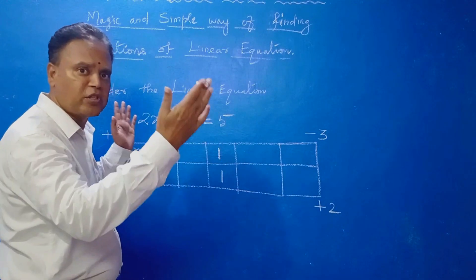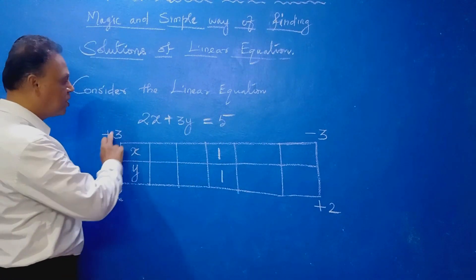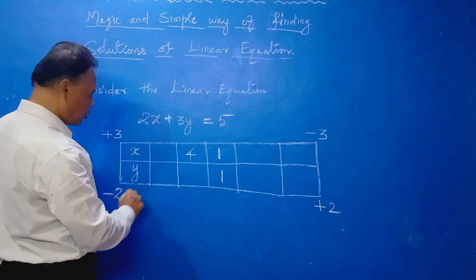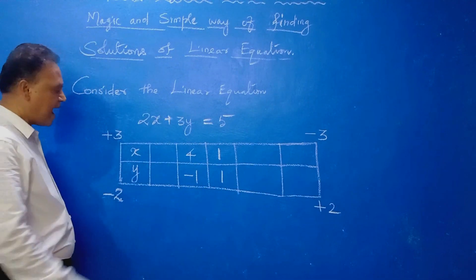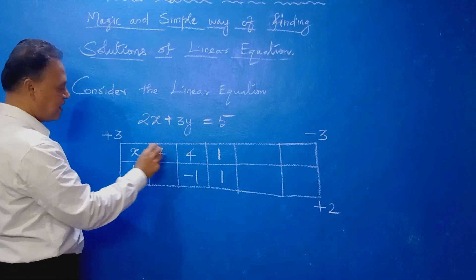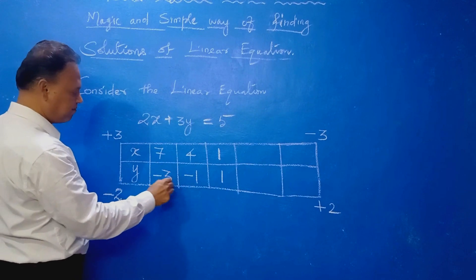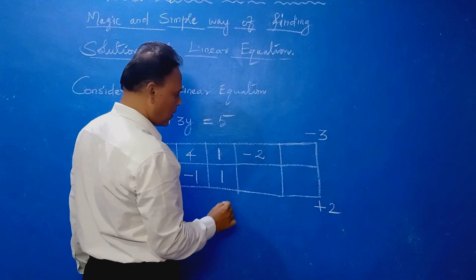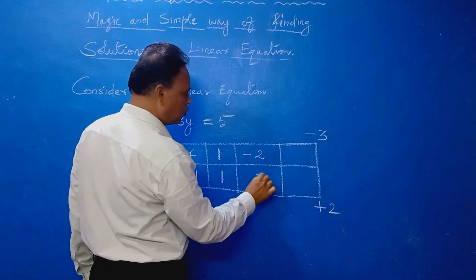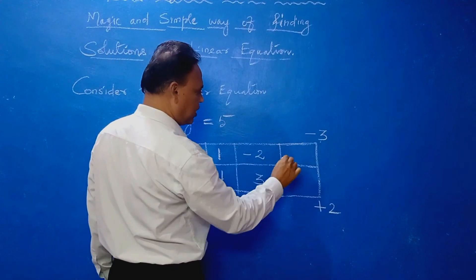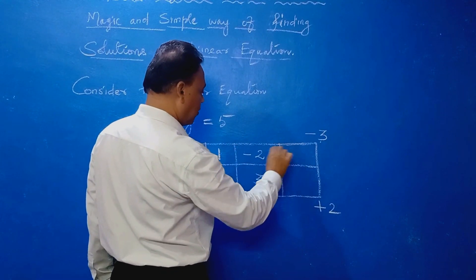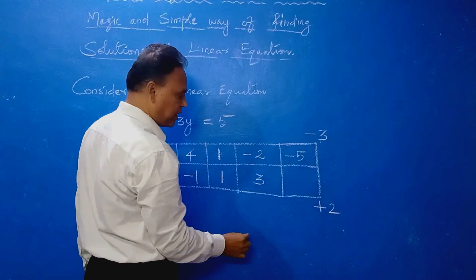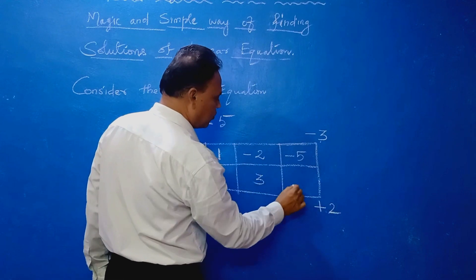Now you can find out many solutions. Just by adding: 3 plus 1 is 4, minus 2 plus 1 is minus 1. Again add: 7. Again add: minus 3. Same way: 1 minus 3 is minus 2, 1 plus 2 is 3. Then 1 minus 3 is minus 2, minus 2 minus 3 is minus 5, then 3 plus 2 is 5.